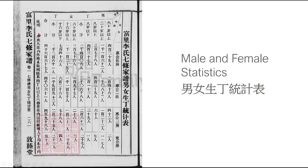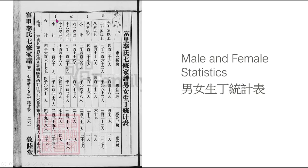For the male side it's divided into four categories: 60 and above, 20 and above, 8 and above, and 8 and below. For the female side, the categories are 60 and above, 16 and above, and 16 and below.